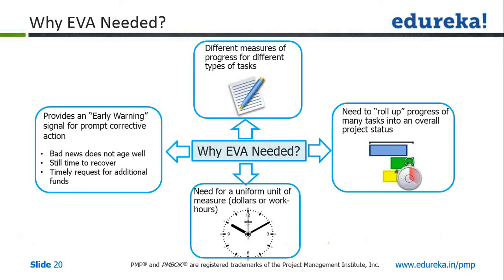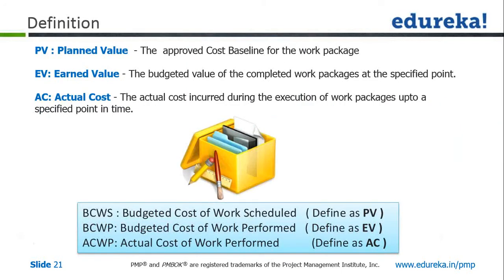Let us quickly talk about how it is done. We first need to understand these three key elements of earned value analysis. PV — that is planned value — means the work that was planned till that checkpoint. Earned value is how much work we have completed till that checkpoint. And actual cost, that is AC, means how much money we have spent in actual in doing that particular work.